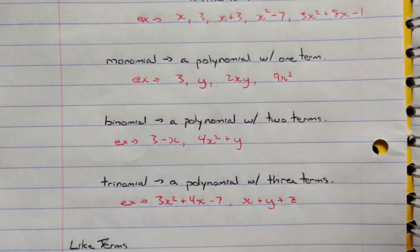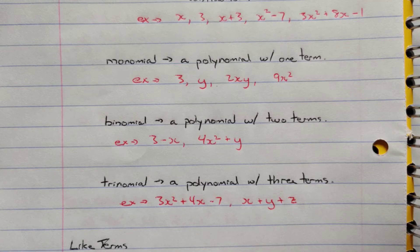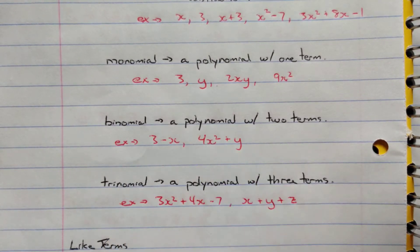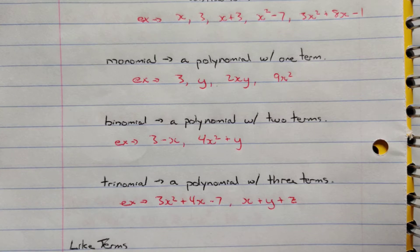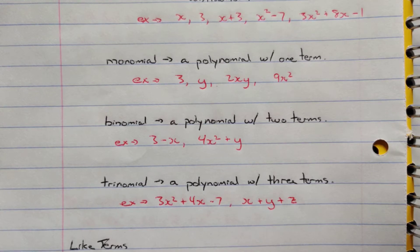A binomial is a polynomial with two terms — for example, 3 minus x, or 4x squared plus y. Remember, terms are separated by addition and subtraction signs. A trinomial has three terms — for example, 3x squared plus 4x minus 7, or x plus y plus z.